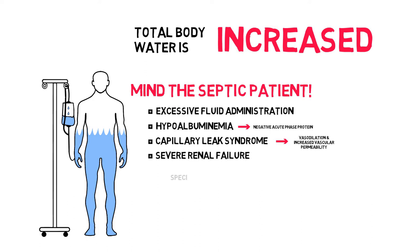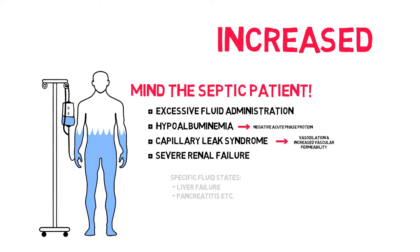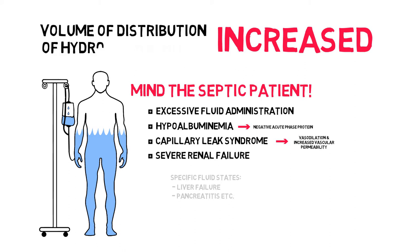There are also specific conditions in which this is expressed even more. For example, in severe liver failure, there is ascites due to not only low albumin levels, but also due to increased hydrostatic pressure in the portal system. Another example is acute pancreatitis, where the patient loses a lot of alkaline fluids into the abdomen. So what does this mean in clinical practice? An increase in total body water means that for hydrophilic drugs, the volume of distribution is increased.